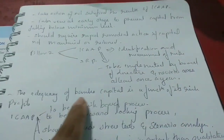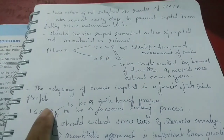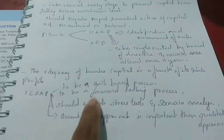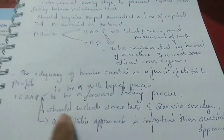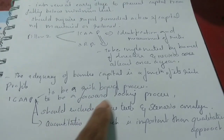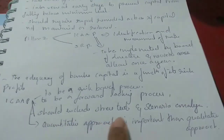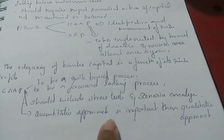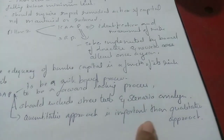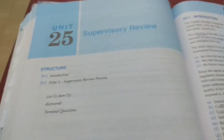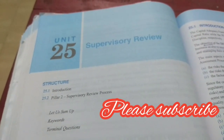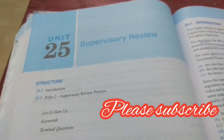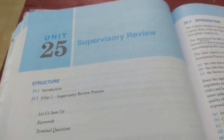A bank's capital is a function of its risk profile. ICAP should be a risk-based and forward-looking process, should include stress and scenario analysis, and a quantitative approach is more important than a qualitative approach. That's all for this chapter — see you in the next unit, Unit 26.